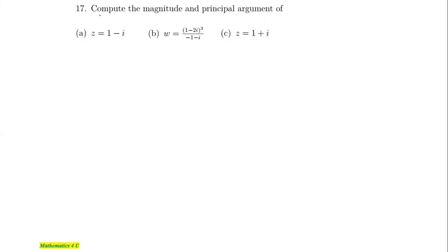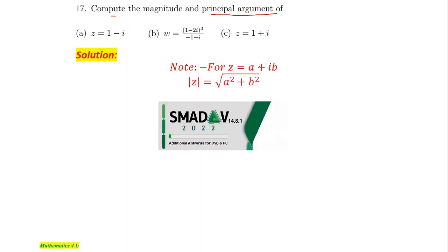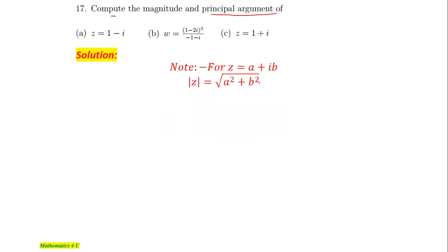Question 17 asks us to compute the magnitude and principal argument of the following complex numbers. Starting from part a, for a complex number of the form a + ib, the magnitude is the square root of a² + b², and the argument is the angle between the positive x-axis and the line determined by the complex number, which is tan inverse of b over a.